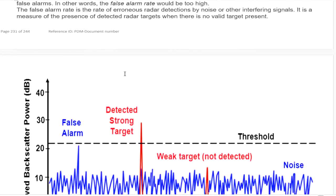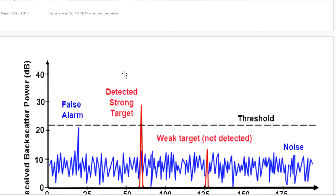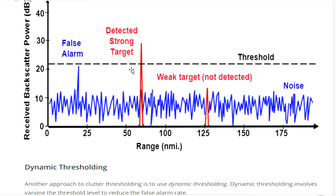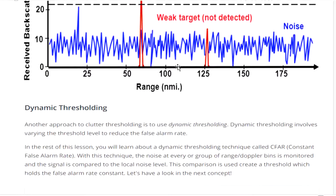The false alarm rate is the rate of erroneous radar detections caused by noise or interference signals. It is a measure of the presence of detected radar targets when there are no valid targets present. So the threshold should be neither too high nor too low — too low gives a lot of noise, too high means you miss a lot of targets.